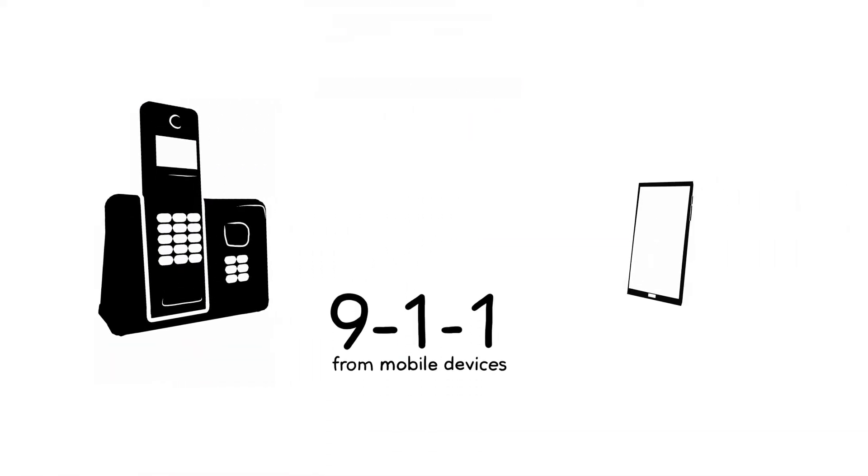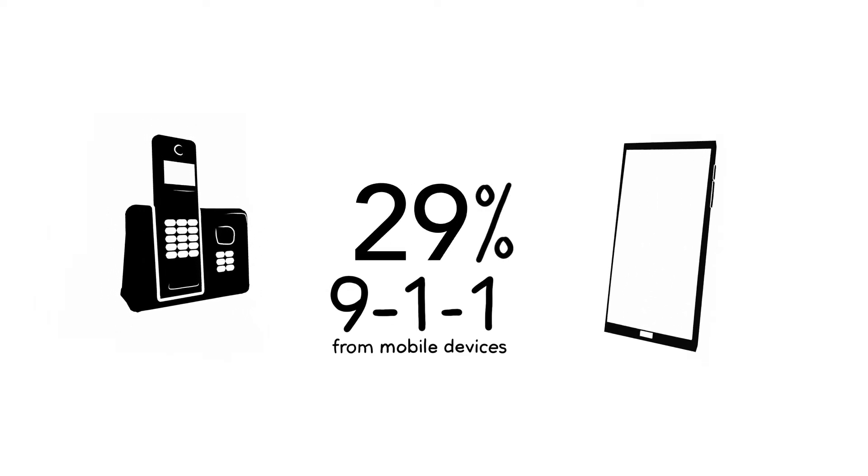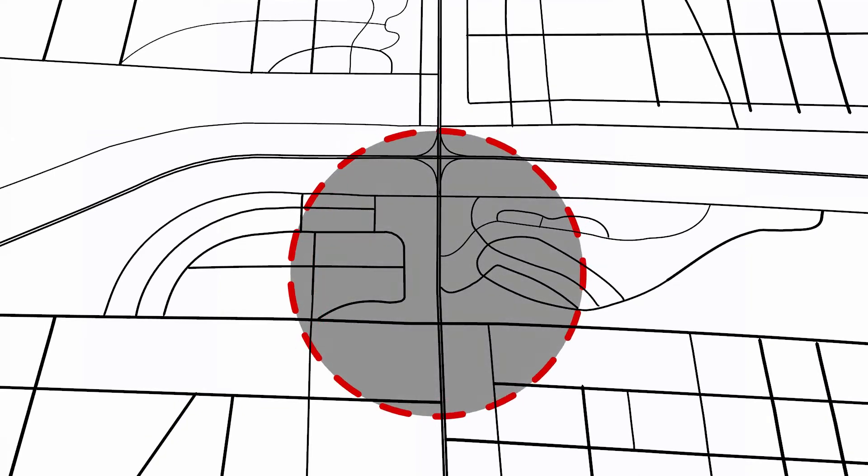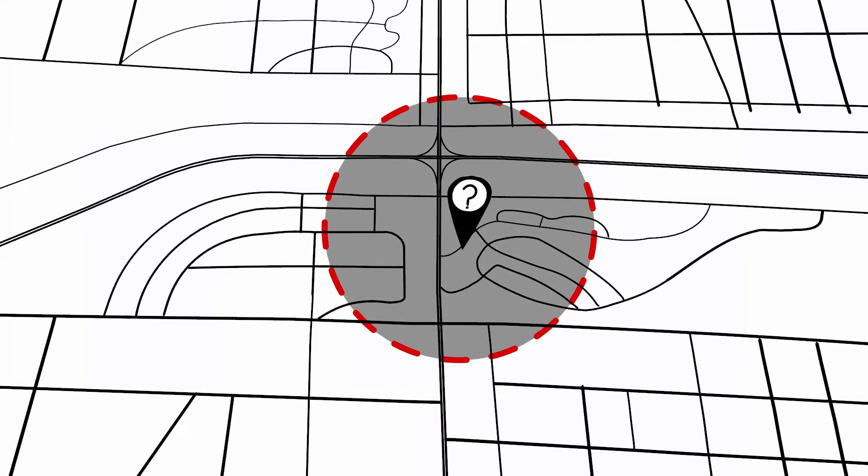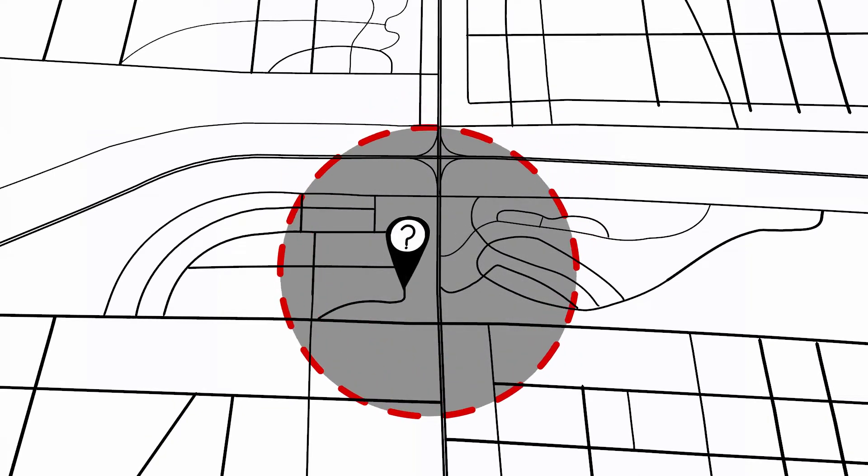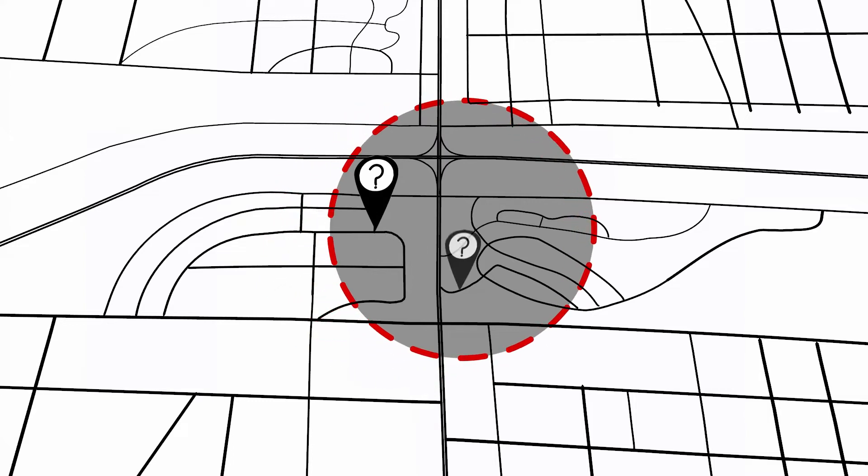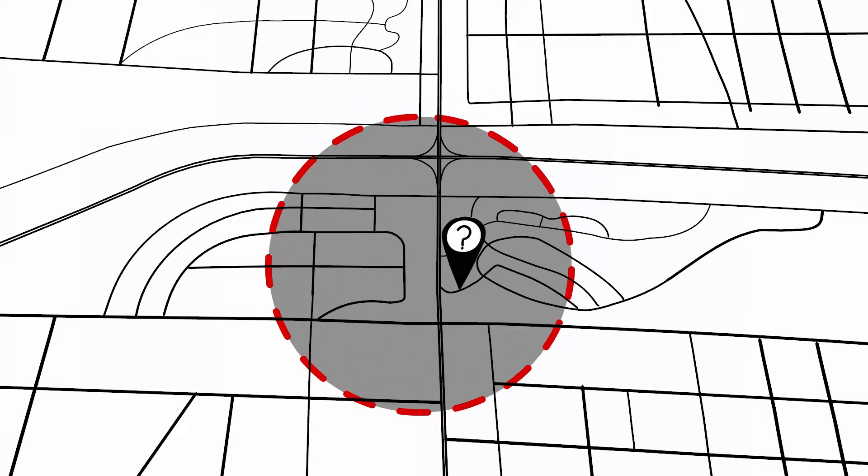There's a steady downward trend of calls to 9-1-1 from landlines. 9-1-1 infrastructure is currently limited in its ability to precisely determine a mobile caller's location, adding precious seconds to verify both the caller and event location.